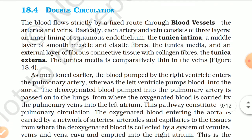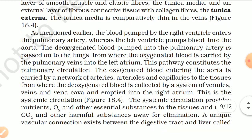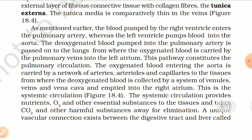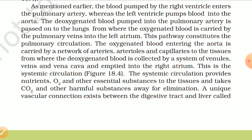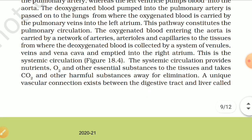The blood pumped by the right ventricle enters the pulmonary artery, while the left ventricle pumps blood into the aorta. The deoxygenated blood pumped into the pulmonary artery is passed to the lungs, from where oxygenated blood is carried by the pulmonary vein into the left atrium — this constitutes the pulmonary circulation. The oxygenated blood entering the aorta is carried by arteries, arterioles, and capillaries to the tissues, and the deoxygenated blood is collected by venules, veins, and vena cava and emptied into the right atrium — this is the systemic circulation.